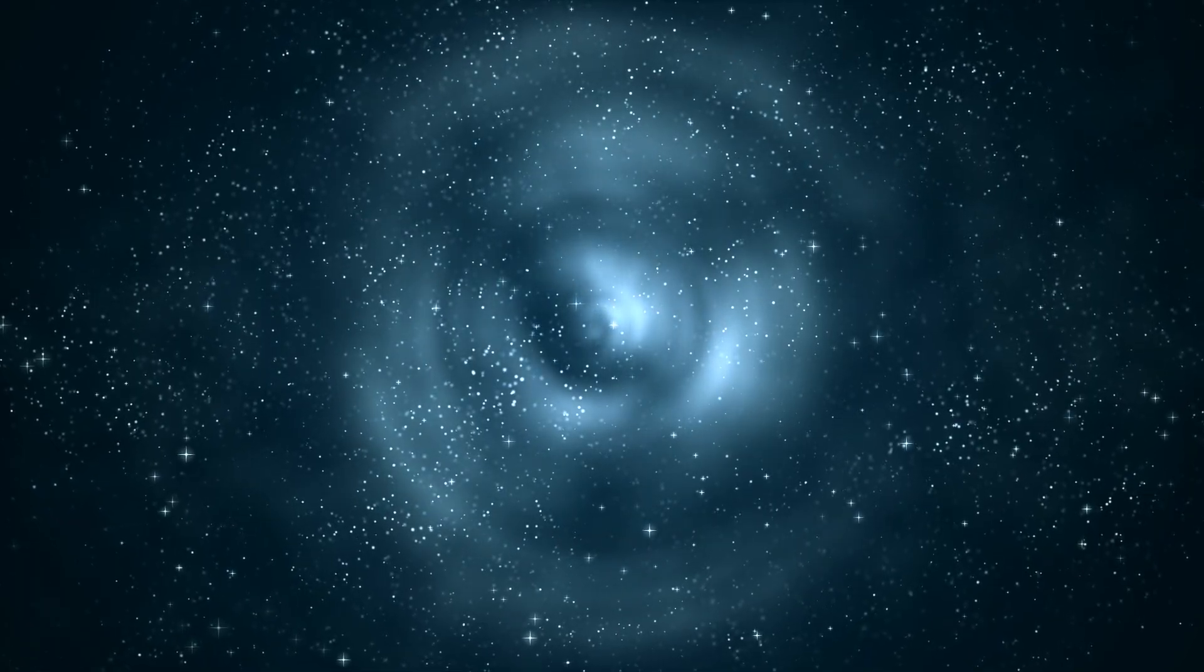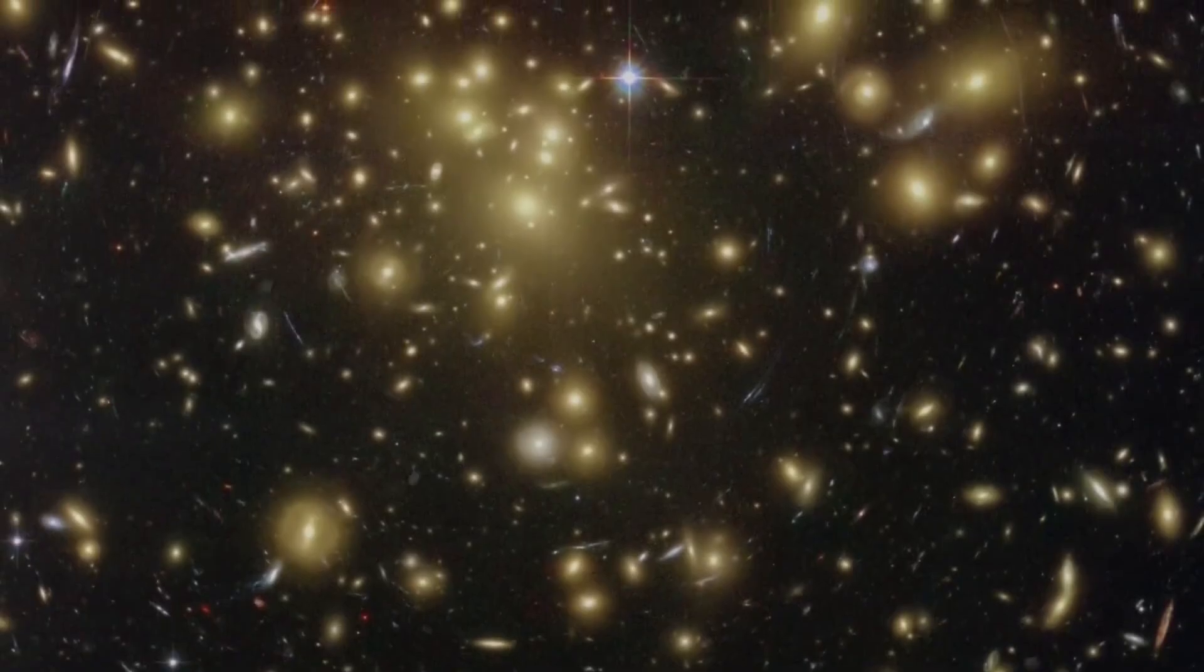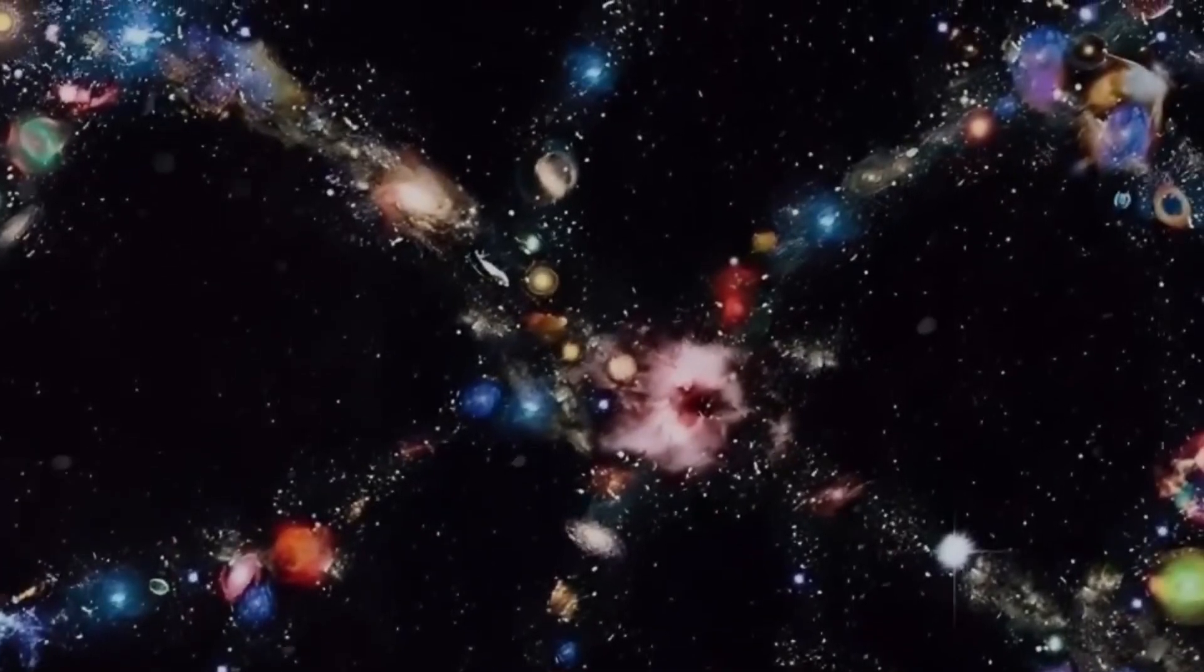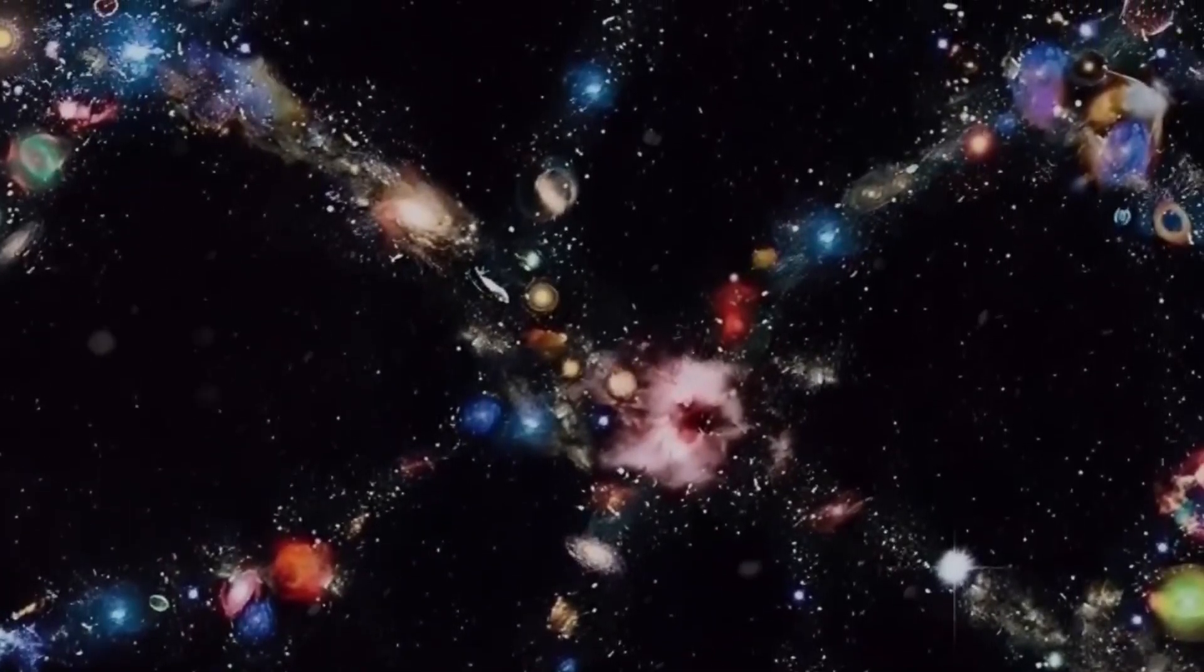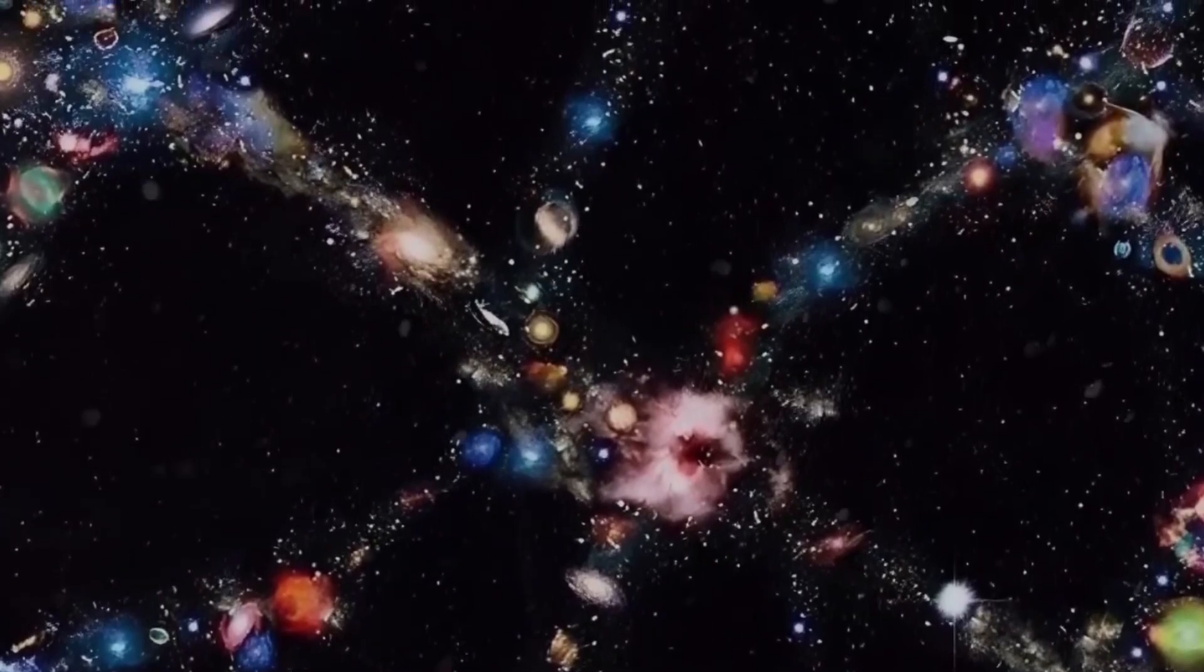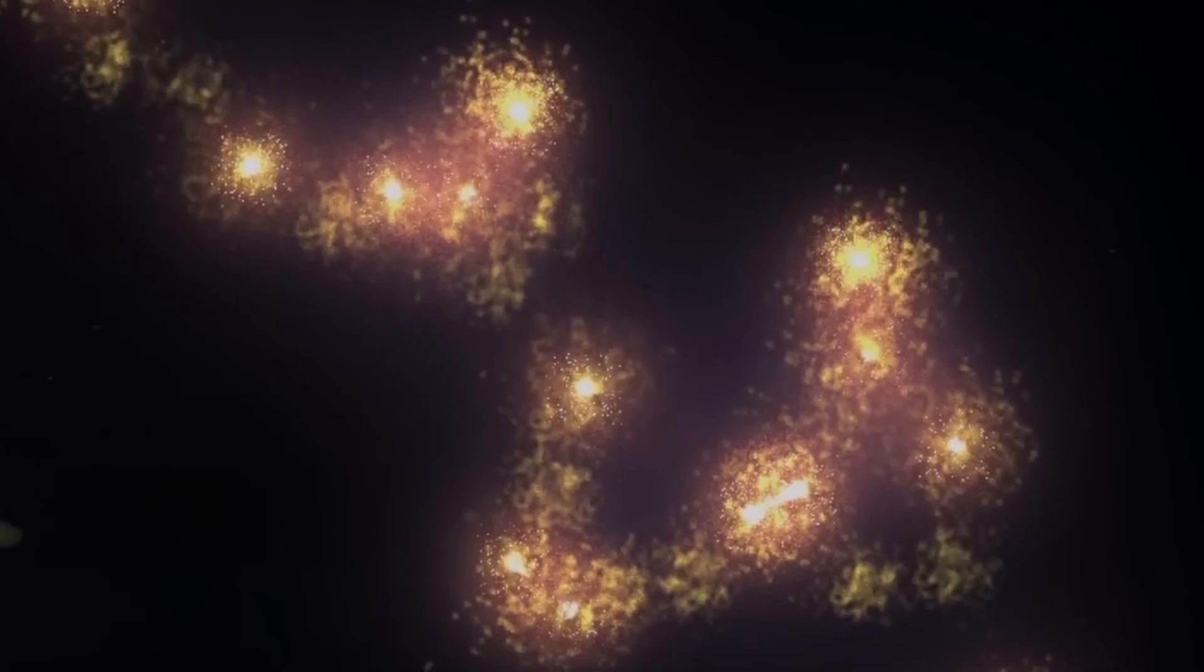The largest known structure in the universe is the Hercules-Corona Borealis Great Wall. This superstructure is a huge group of galaxies forming a giant sheet-like pattern that is about 10 billion light-years long, 7.2 billion light-years wide, and almost 1 billion light-years thick.